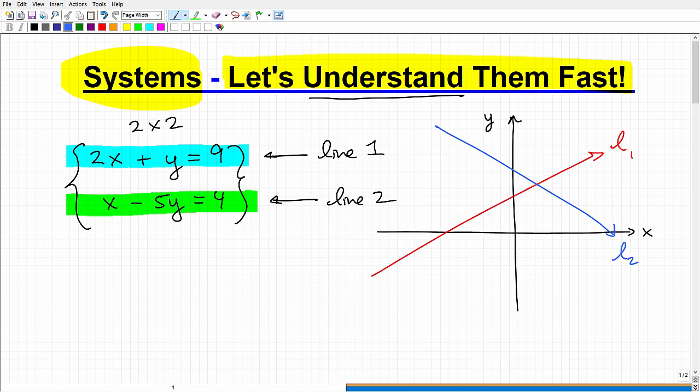And let's say this is line two. Now, these can totally not be the lines of these particular systems, but again, a system is basically examining two lines. That's a linear system. So here we go, one line and another line.